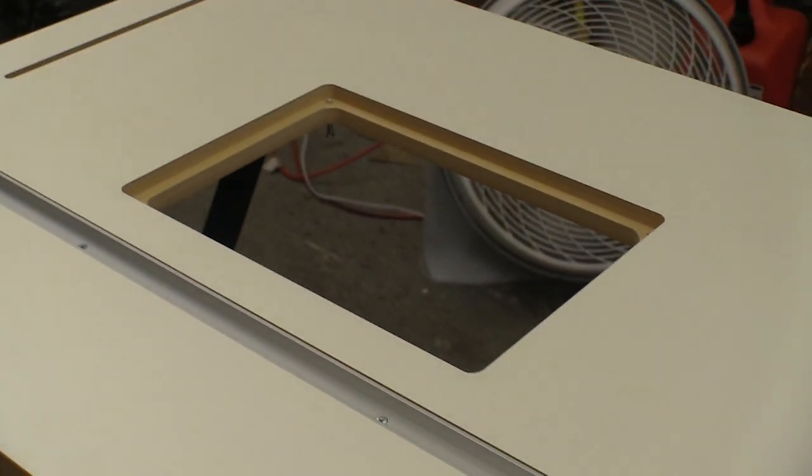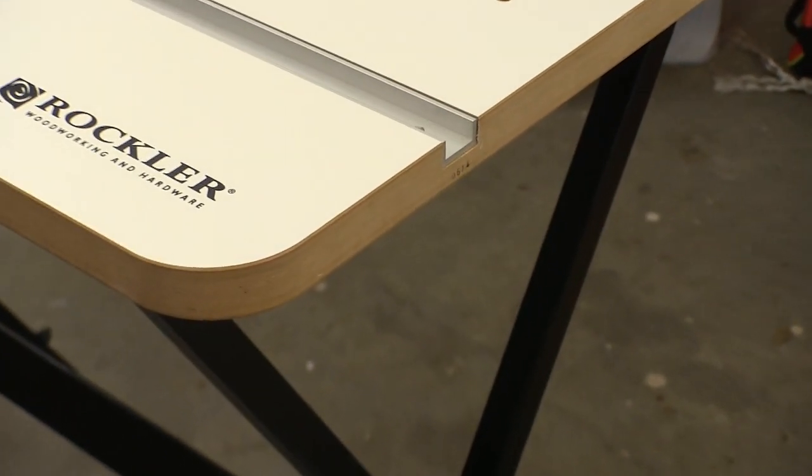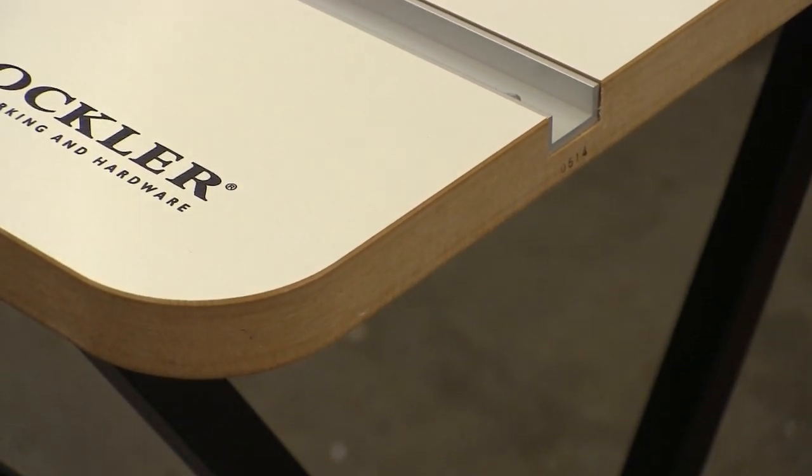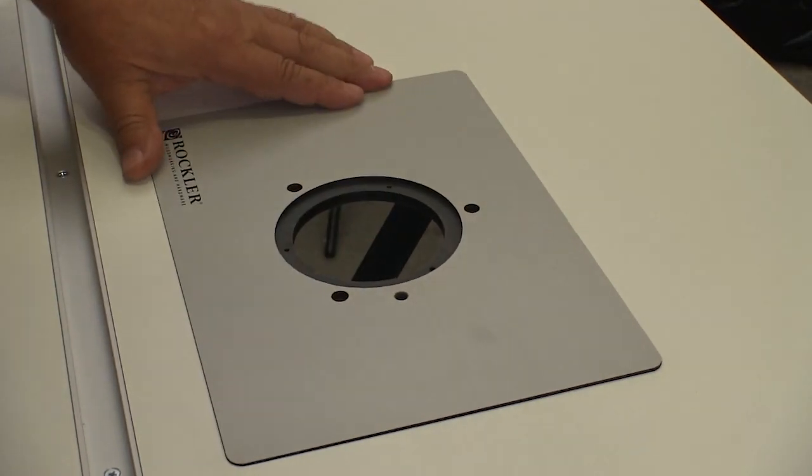The opening is made to accept the 8 and a quarter inch by 11 and three quarter inch by three eighths inch thick router plate that comes with the kit. The table itself is made from one inch thick MDF, which is very tough and very stable.